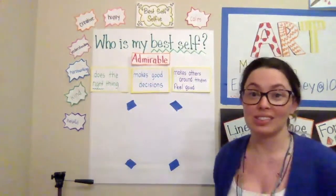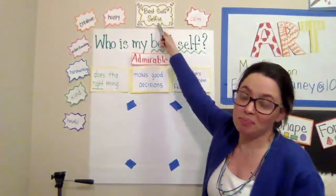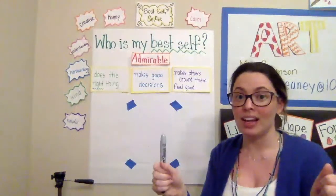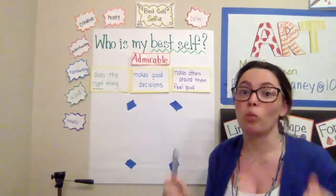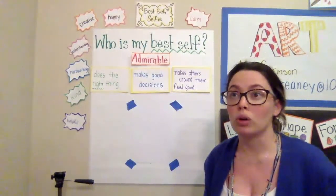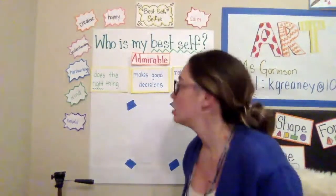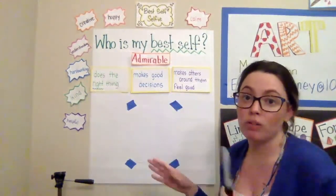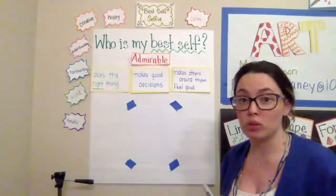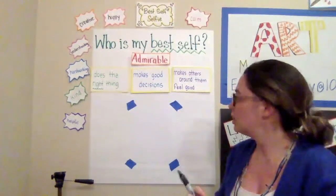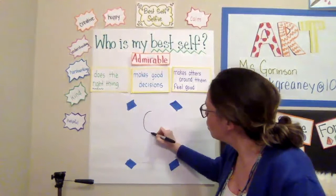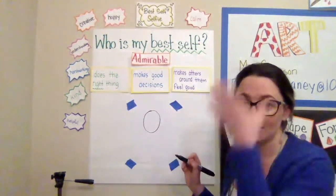We're going to make portraits — kind of like a best self selfie — by drawing our faces, and also drawing ourselves holding up a piece of paper. On that paper, we're going to write down some words about what our best self feels like. I'm going to use a marker so we can see on the video, but I'd recommend just a pencil and paper. On a piece of paper, let's start by drawing either an oval or a circle — that will be our face. Underneath that, draw a rectangle representing the piece of paper we'll be holding.